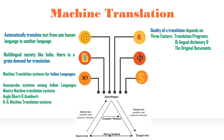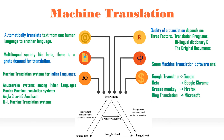Some machine translation softwares are Google Translate, Beta developed by Google Chrome, Grossmengi developed by Firefox, and Bing Translation developed by Microsoft. Some problems in machine translation include: translation of low-resource language pairs, translation across different domains, translation of informal documents, translation into morphologically rich languages, and ambiguity.